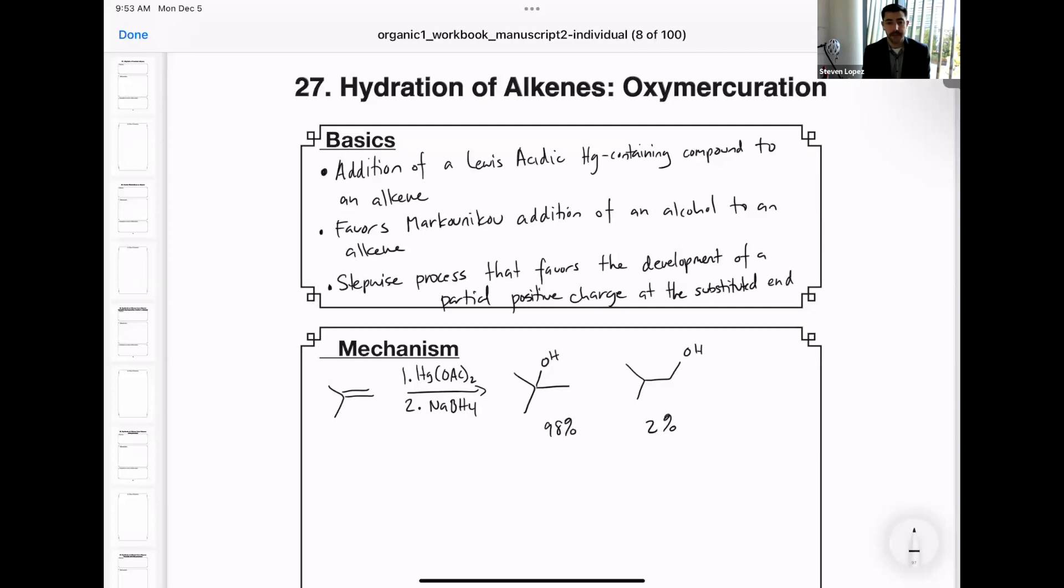First of all, this reaction involves the addition of a Lewis acidic mercury containing compound to an alkene. This is going to favor the Markovnikov addition of an alcohol to an alkene. That means that the alcohol is going to be adding to the more substituted end of that alkene.